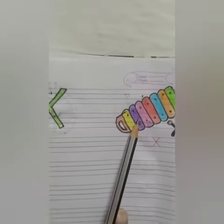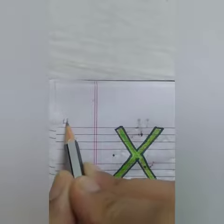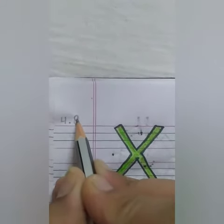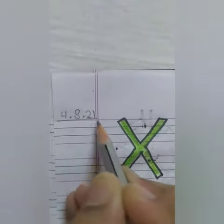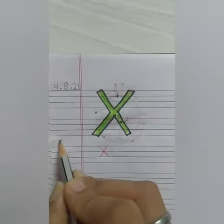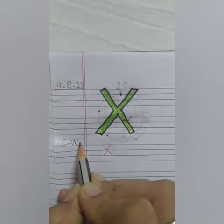X for xylophone. First we will put date, 4, month, 8, and year, 21. This is your classwork. So we will write here C.W.